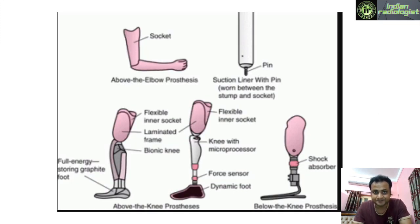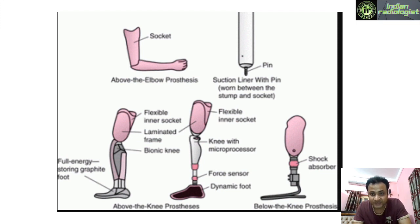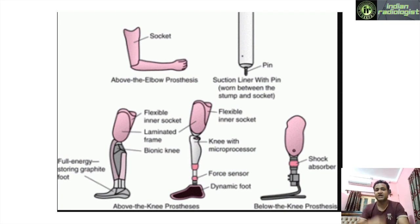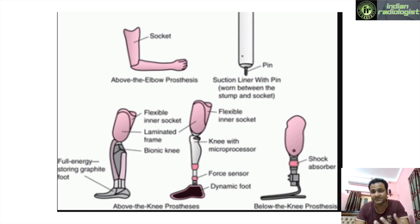We also have above-elbow prosthesis, above-knee prosthesis, and below-knee prosthesis. In the above-knee prosthesis, components visible include a flexible inner liner socket, a laminated frame, and a bionic knee. There is a microprocessor which senses movement and provides the necessary tactile feedback. A shock absorber is used for the below-knee prosthesis.